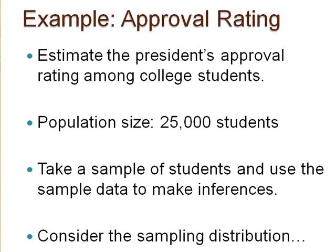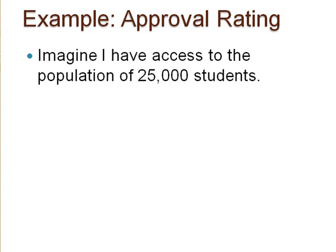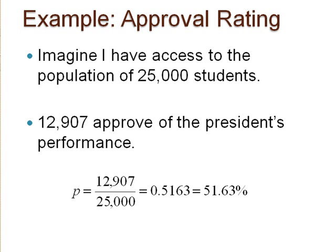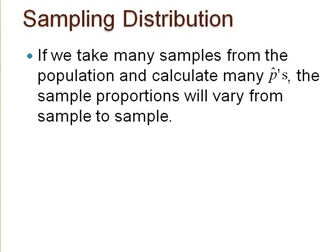To illustrate this, imagine I have access to the population of the 25,000 students and knowledge that 12,907 approve of the president's performance. Pause here to calculate the population proportion. Our population proportion is 51.63%. If I take a sample from that population, I could obtain a sample proportion p-hat. If I take many samples and calculate many sample proportions, I know these sample proportions will vary from sample to sample.